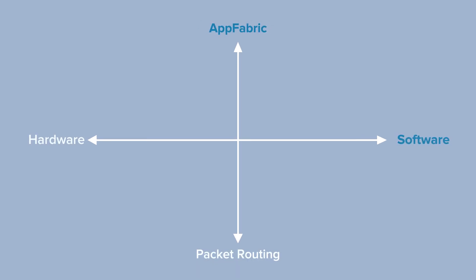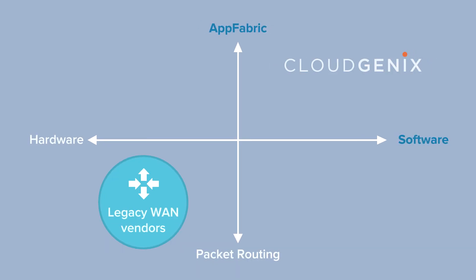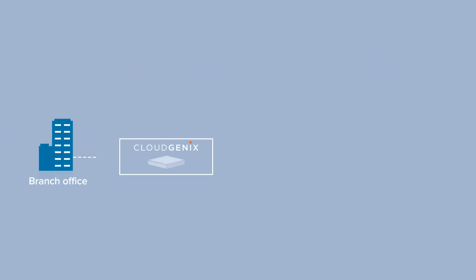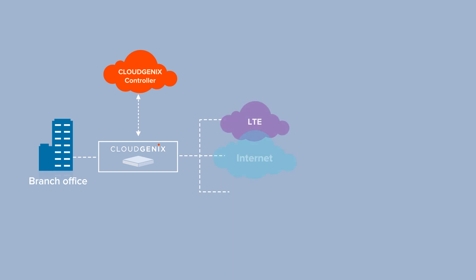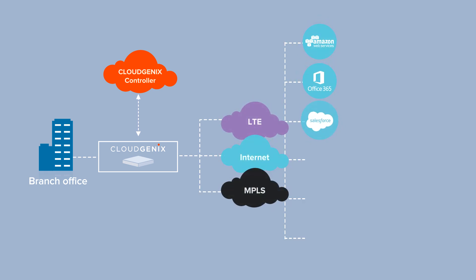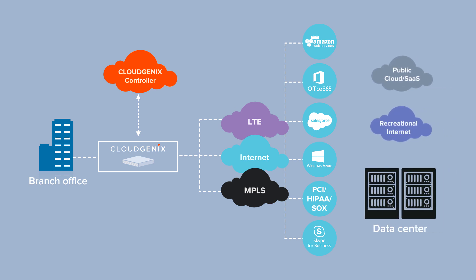As a software and app focused solution, App Fabric from CloudGenX provides these benefits: a self-healing network that natively delivers deep application and network intelligence used to correct network and application performance issues. This takes the guesswork out of networking.